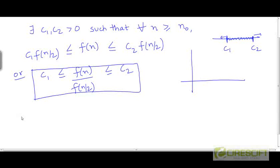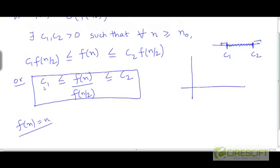So let's say f is equal to n. In that case f(n/2) will be equal to n/2. And f(n) divided by f(n/2) will be simply n divided by n/2, which will be 2. So this is not a problem if f is equal to n, because the ratio of f(n) and f(n/2) is a fixed constant 2. So it is sandwiched between two constants c₁ and c₂.